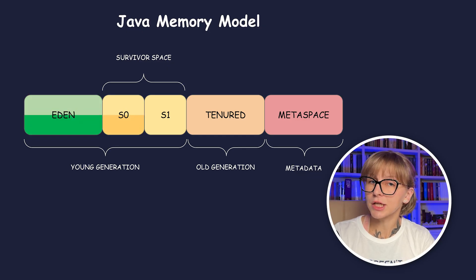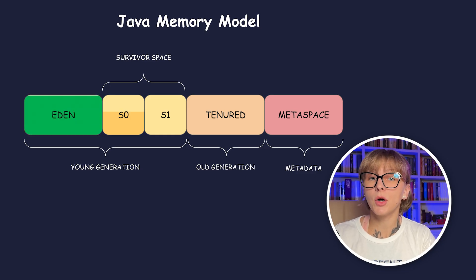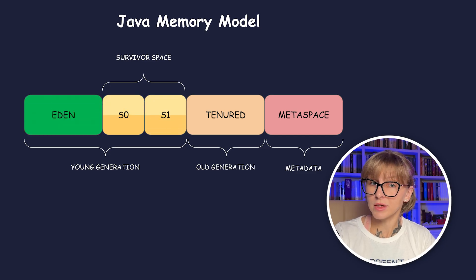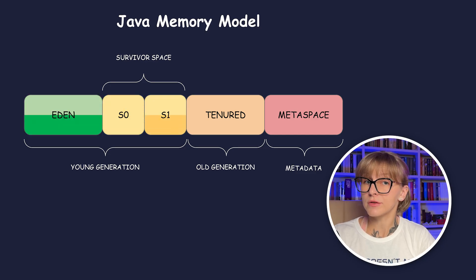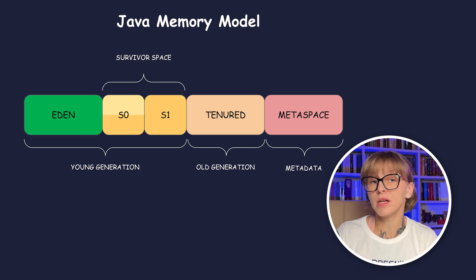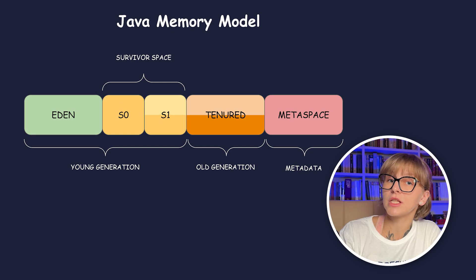A minor collection happens when the young space tops up. If some objects are still used at the moment of garbage collection, they are promoted to survivor space 0 and then to survivor space 1. If they are still alive in survivor space 1, they are promoted to the old generation and moved to the tenured space.